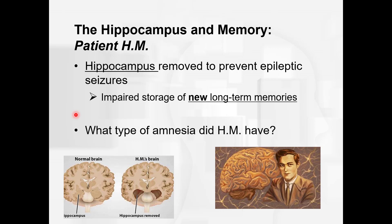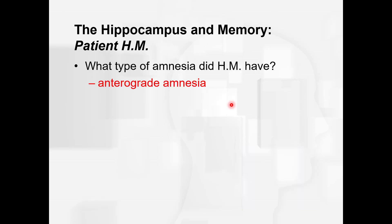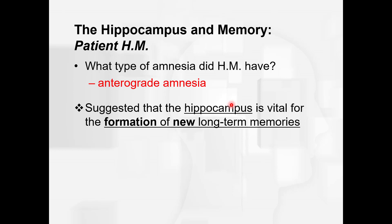So what type of amnesia did HM have — anterograde or retrograde? He had impaired storage of new long-term memories; he could not form memories after the brain damage. That's going forward — that is anterograde amnesia. He couldn't describe any experience after his surgery and he didn't remember most facts after his surgery, though he did remember experiences from before. This suggested the hippocampus is vital for the formation of new long-term memories.